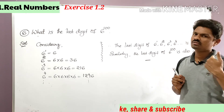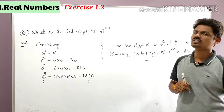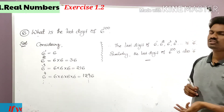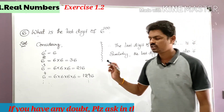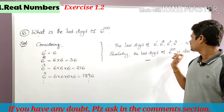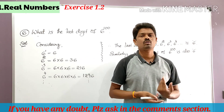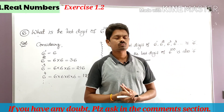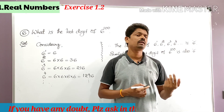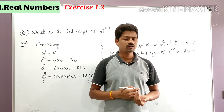So 6 to the power 50, the last digit is also 6. 6 to the power 100 is also 6. 6 to the power 200 is also 6. For any natural number, it ends with 6 only. Therefore, the last digit of 6 to the power 100 is 6. This is the sixth problem from exercise 1.2. If you are watching my channel for the first time, subscribe and hit the bell icon to get notifications whenever I upload videos. We will meet in the next class with another problem.